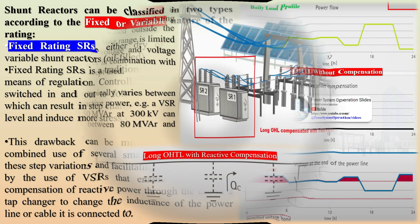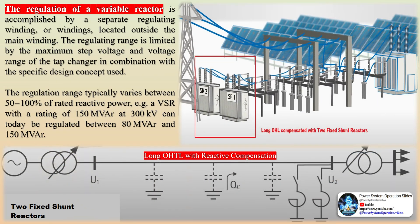The regulation of a variable reactor is accomplished by a separate regulating winding, or windings, located outside the main winding. The regulating range is limited by the maximum step voltage and voltage range of the tap changer in combination with the specific design concept used. The regulation range typically varies between 50 to 100% of rated reactive power.